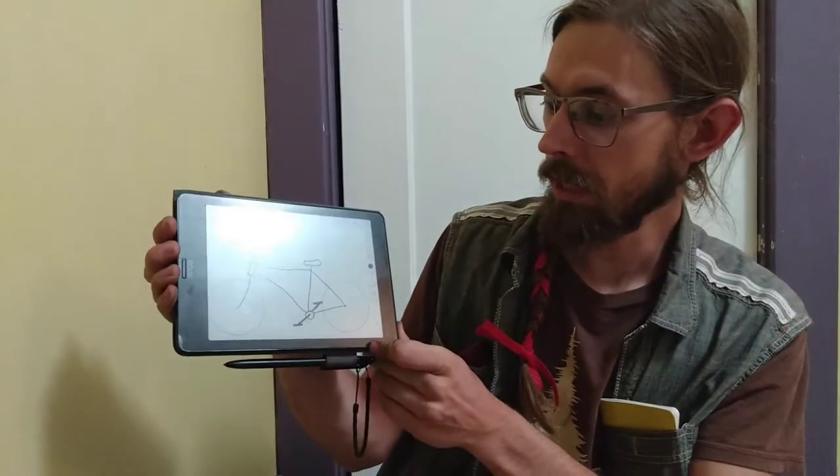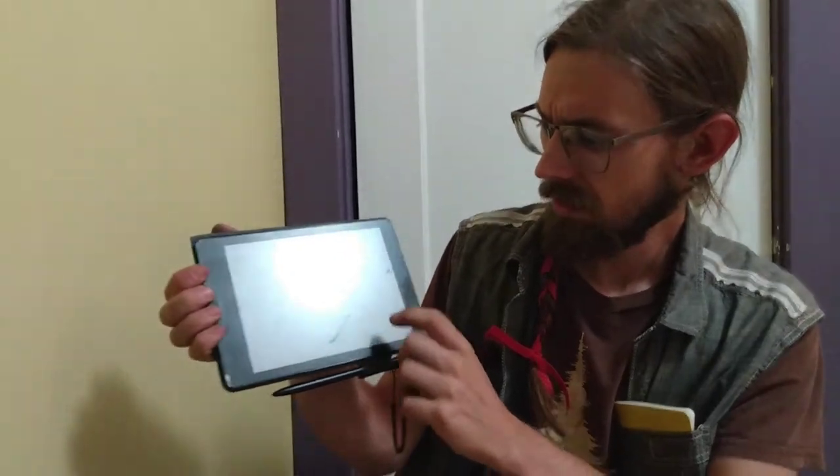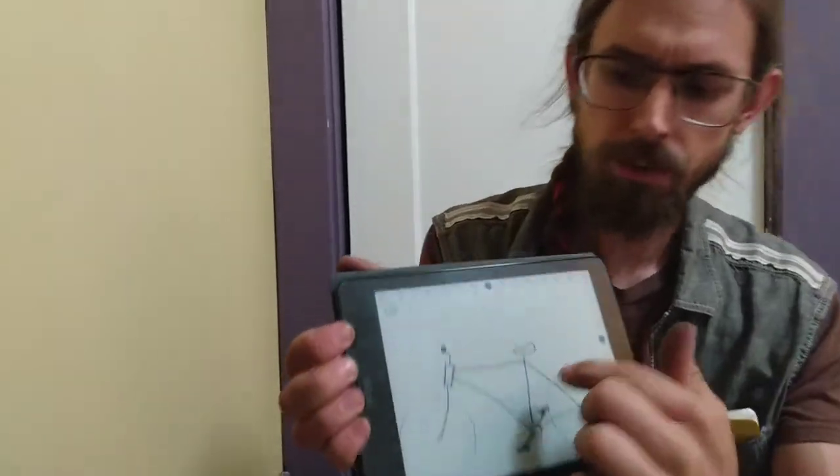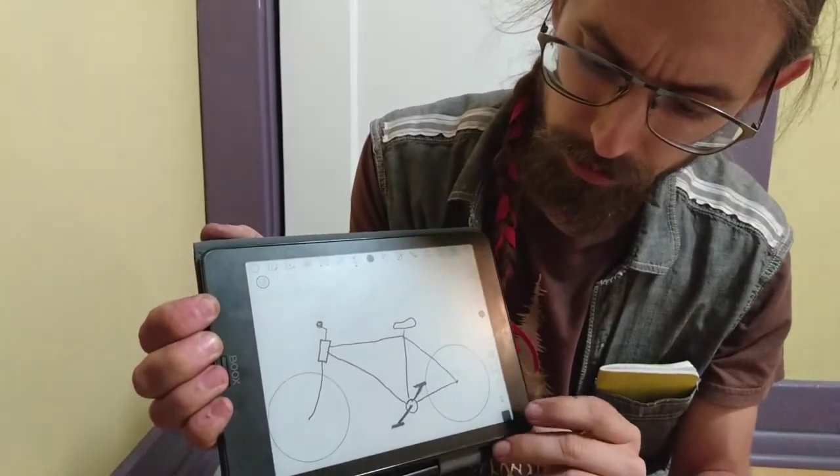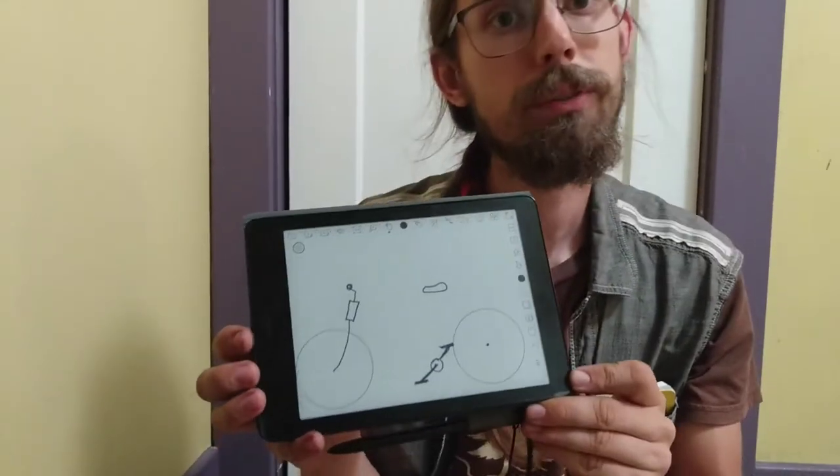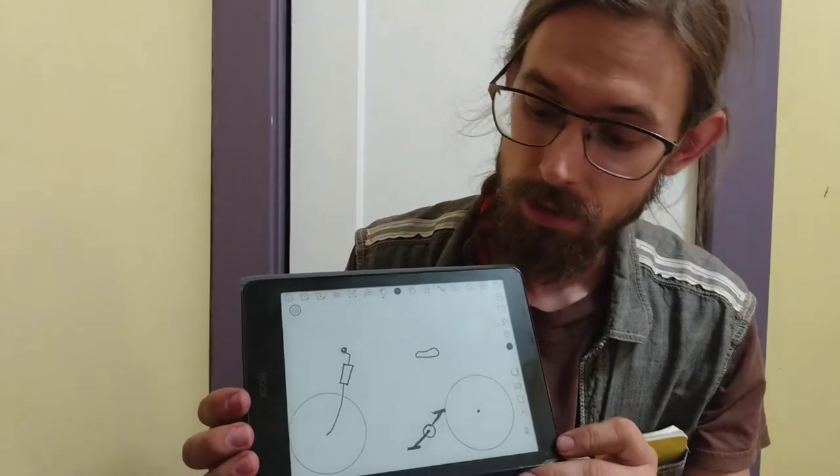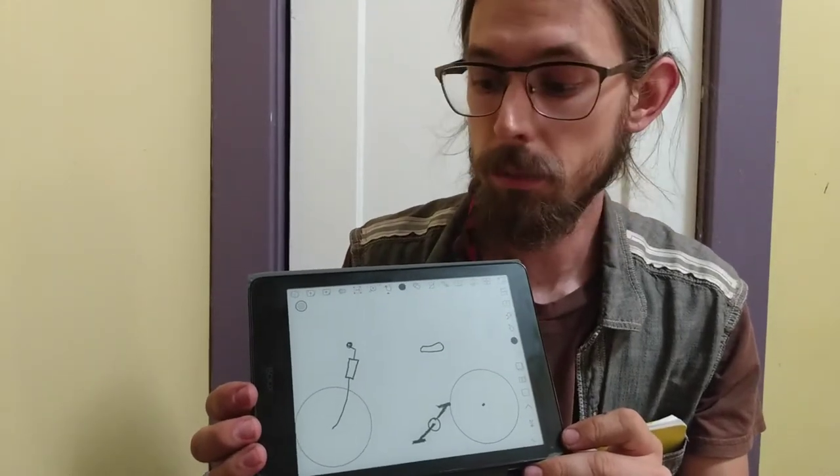So back to our basic bike, let's get rid of this frame. Now we've just got the important parts: the seat, the wheels, the pedals, the handlebars.